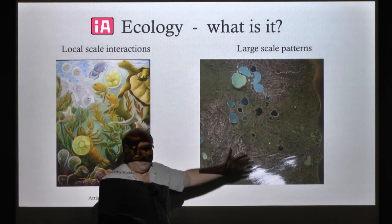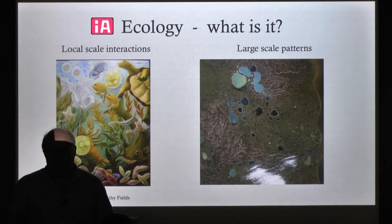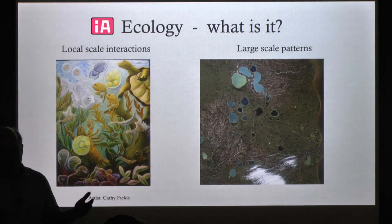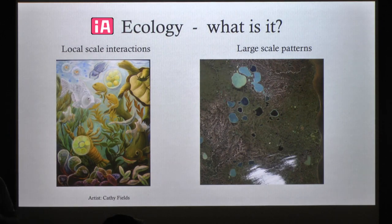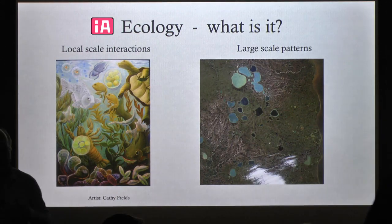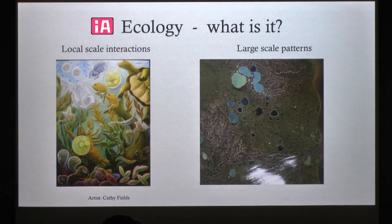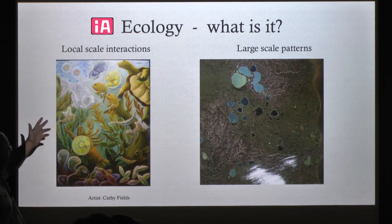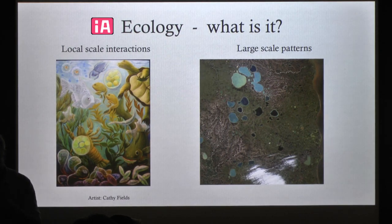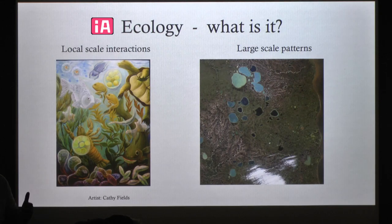The large-scale approach involves looking at patterns mostly and trying to understand the distribution of species or the distribution of processes across large-scale variation. The alternative is the focus on local-scale interaction. I evoke Charles Elton here because he was really the first person to propose the main ways we could think about how species interact in their day-to-day life to produce ecological interactions and patterns. Here's a painting of a pond, which is what I usually study, going from bacteria to fish.